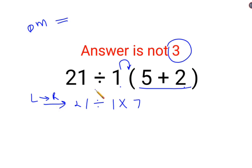So first operation what you need to do is 21 divided by 1 which is 21 multiplied by 7. So answer for this question is supposed to be 147.